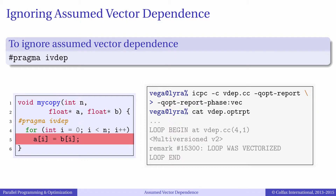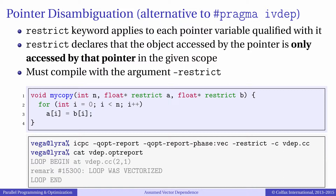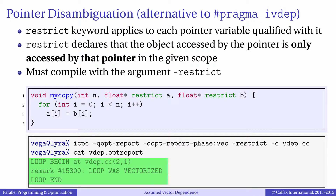However, in complex loops some pointers may be aliased and others unaliased. In this case using pragma ivdep will result in incorrect behavior. There is a more fine-grained approach to pointer disambiguation in C and C++ that relies on the keyword restrict. The keyword restrict may appear in the declaration of a pointer, especially a pointer-based function argument, and it promises to the compiler that no other pointer maps to the same memory region. In order to use restrict we must compile the code with the argument -restrict. The compiler report shows that the keyword restrict achieves the same result as pragma ivdep — our loop with assumed vector dependence is vectorized.